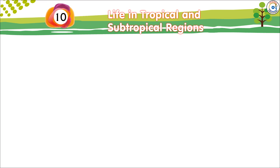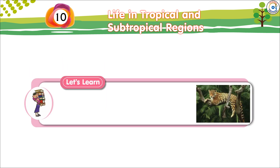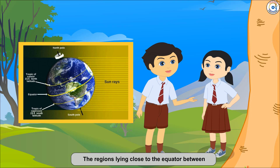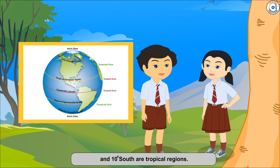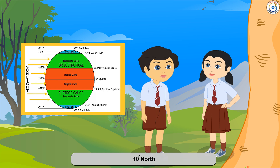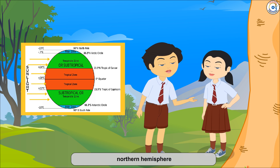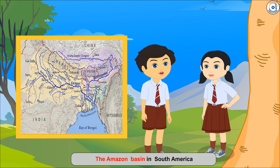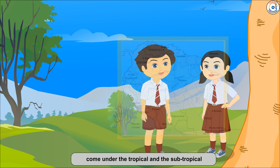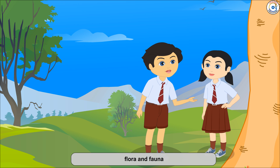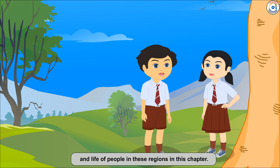Chapter 10: Life in Tropical and Subtropical Regions. We will learn about the Amazon Basin and the Ganga Brahmaputra Basin. The regions lying close to the equator between 10 degrees north and 10 degrees south are tropical regions. These regions are hotter as the sun rays fall directly in this region. The subtropics are regions between 10 to 30 degrees north and 10 to 30 degrees south. We will learn about the climate, flora and fauna, and life of people in these regions in this chapter.